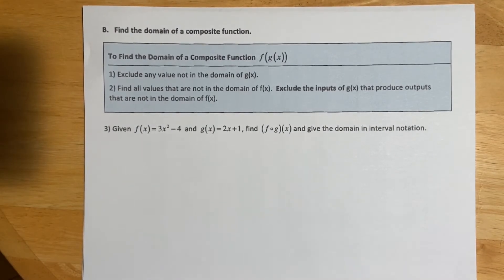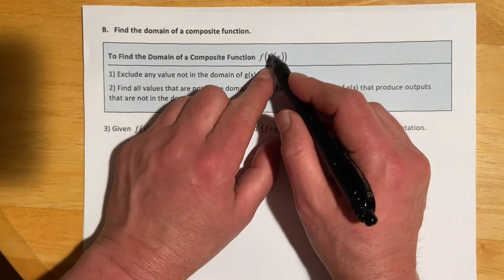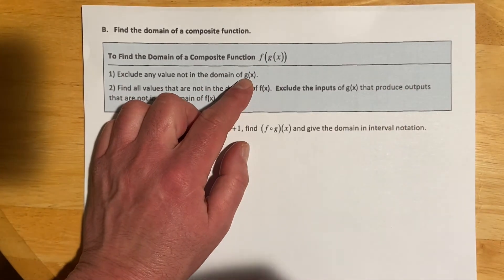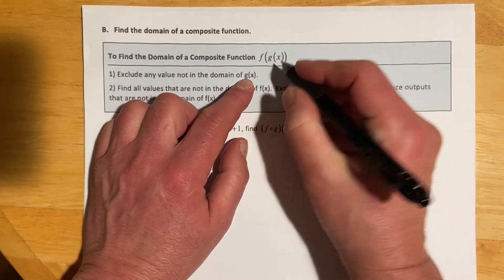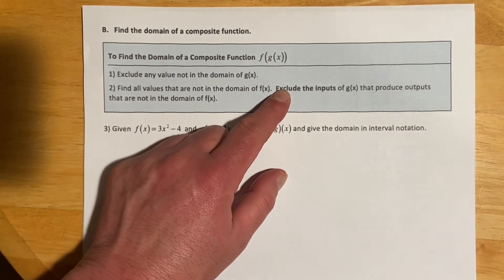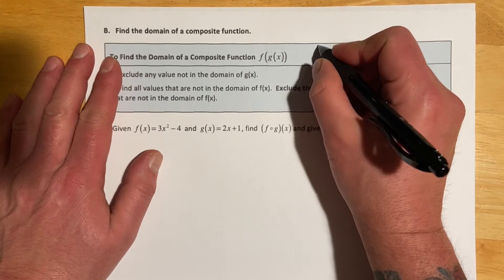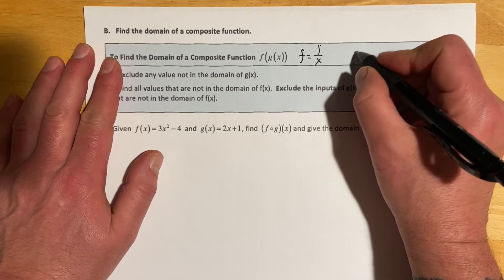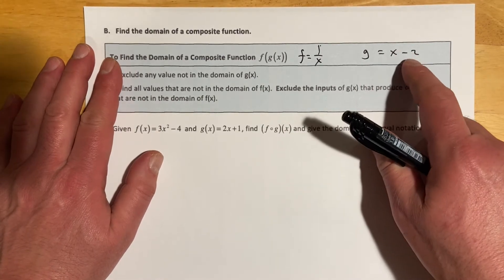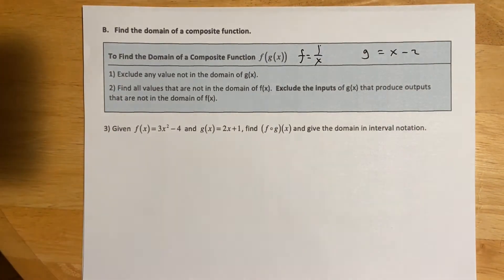Next up is the domain of a composite function. There are a couple of things to consider. Anything that messes up g of x can't be in the domain of the composite. And anything not in the domain of f — we have to make sure g of x doesn't output that value. For example, if f of x is 1 over x and g of x is x minus 2, then x can't be 2, because g of 2 equals 0, which makes f undefined.